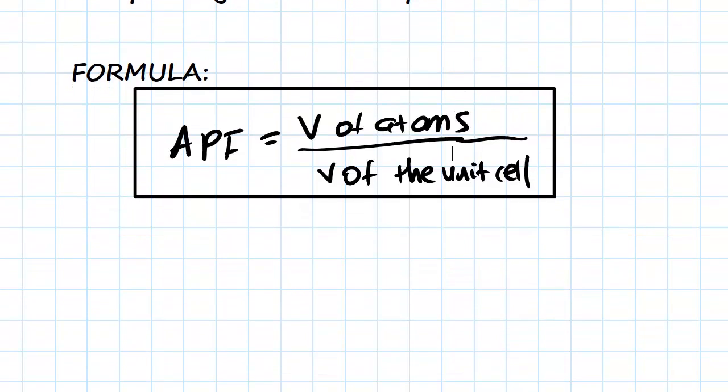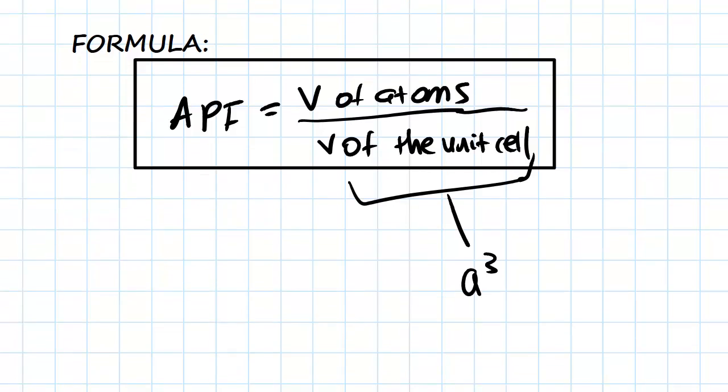So if we break that up into the numerator and denominator, well the bottom is quite easy. The volume of the unit cell essentially is just going to equal A cubed, because the lattice parameter is A, as we've spoken about before. So the volume of the whole unit cell is always going to be A cubed.